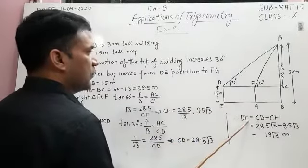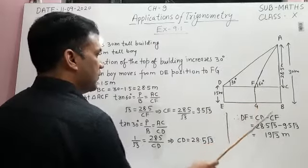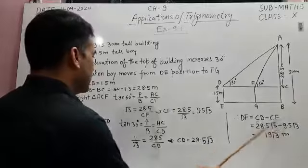From this we get CD equal to 28.5 root 3. But we have to find DF. That's why DF is equal to CD minus CF.